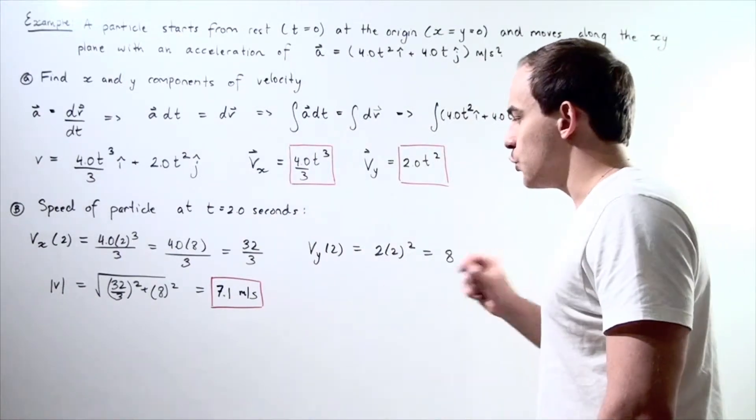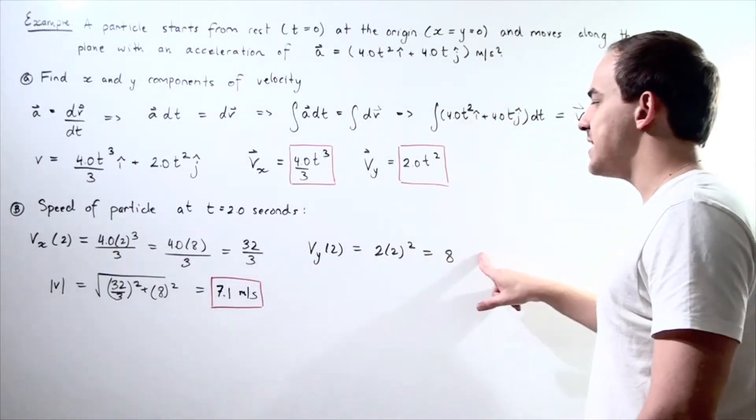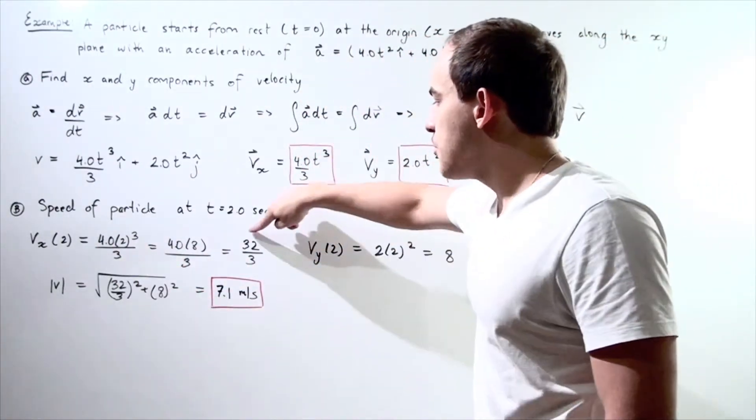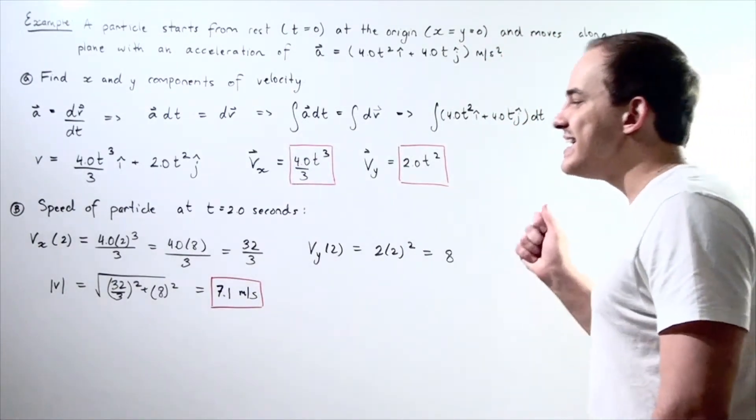My magnitude of the y component is 2 times 2 squared. So, that gives me 8. So, the magnitude of my x component is 32 divided by 3, and the magnitude of my y component is 8.